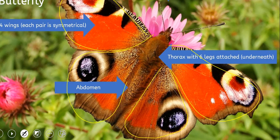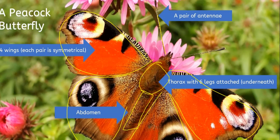Their wings are symmetrical, which means if you folded them over they would be equal. Here we have the abdomen at the back and the thorax in the middle. The thorax has the legs attached as well as the wings, and the antennae are at the head.